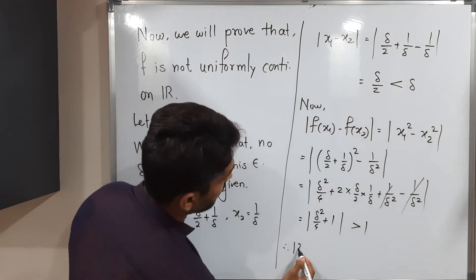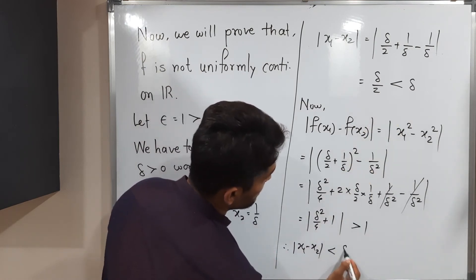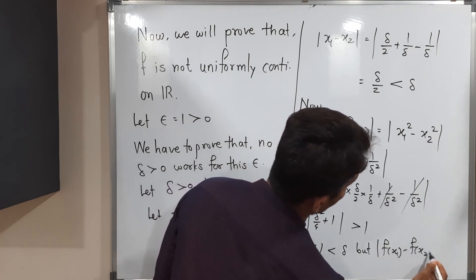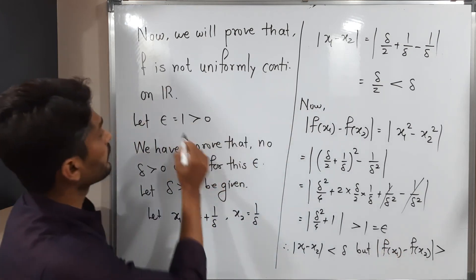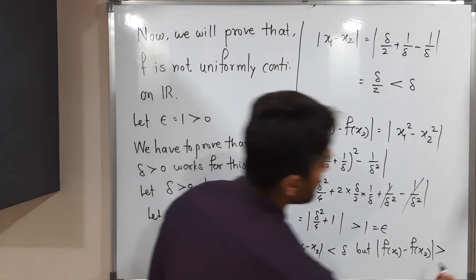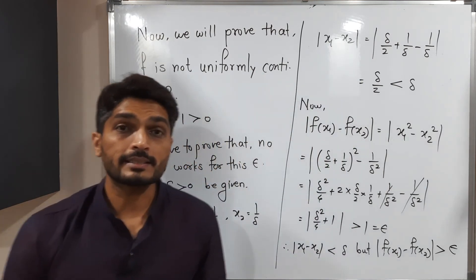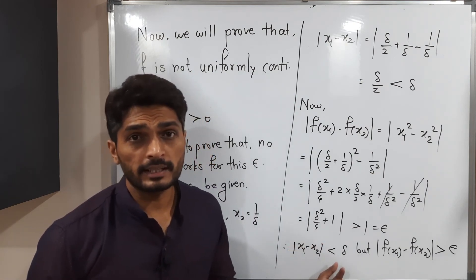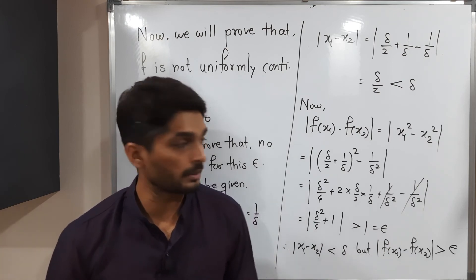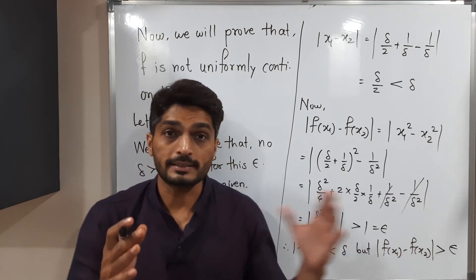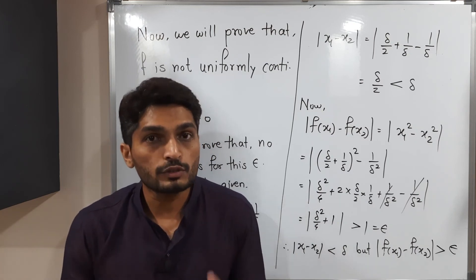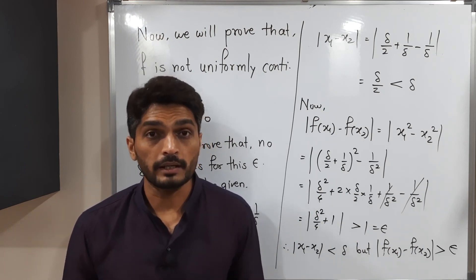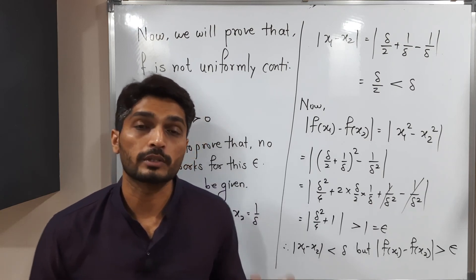So we conclude: |x₁ − x₂| < δ, but |f(x₁) − f(x₂)| > 1 = ε. This is exactly opposite to the definition of uniform continuity, which requires that if |x₁ − x₂| < δ then |f(x₁) − f(x₂)| < ε. Since the definition is not satisfied, f is not uniformly continuous. Therefore, f is continuous but not uniformly continuous, which verifies our remark: every uniformly continuous function is continuous, but every continuous function need not be uniformly continuous.